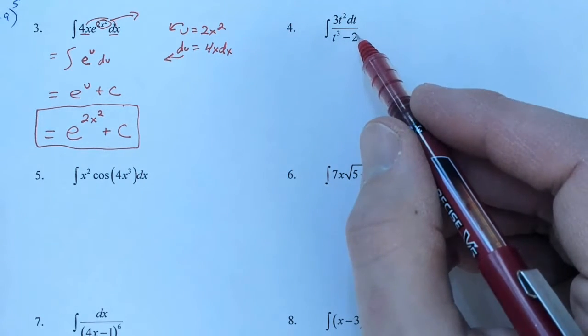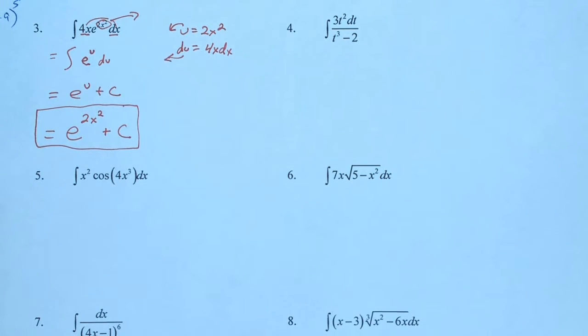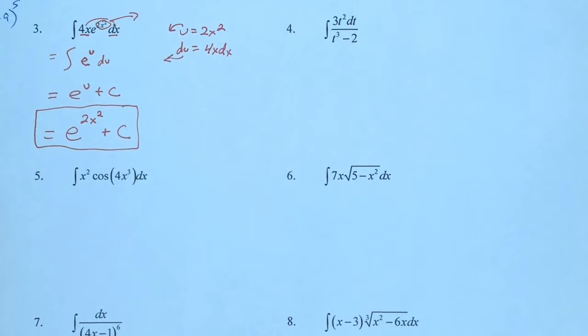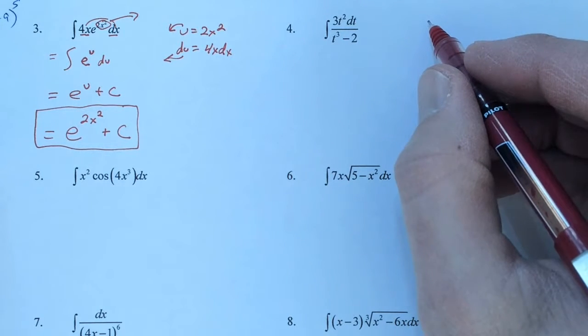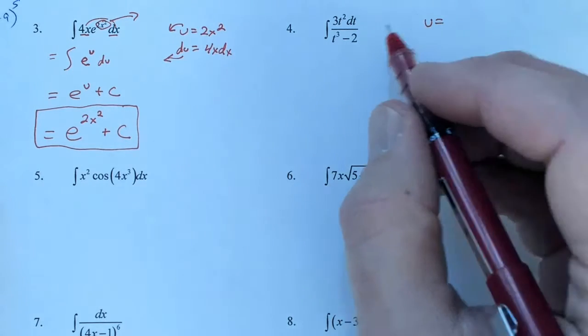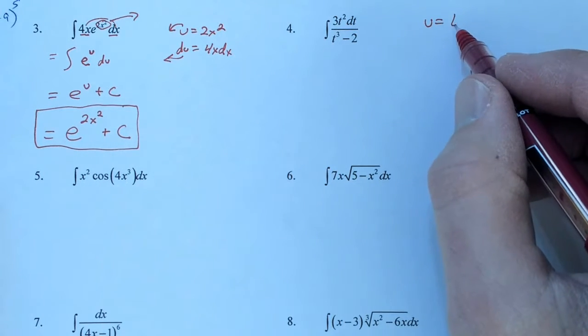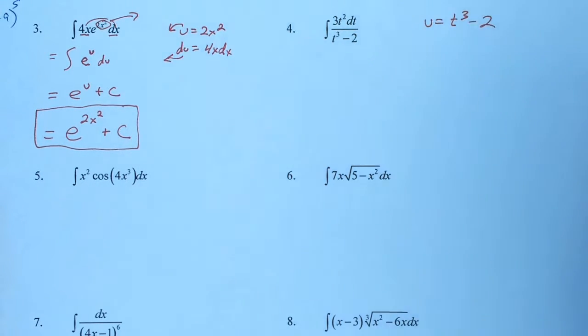With number four, we see division. So when division comes into play, and there's no way to simplify it like we did with the previous problems, then we're looking to make u equal to the function inside the denominator. So in this case, we have u is equal to t cubed minus 2.